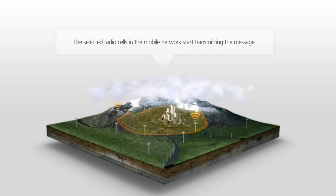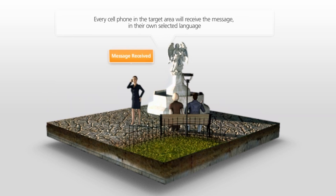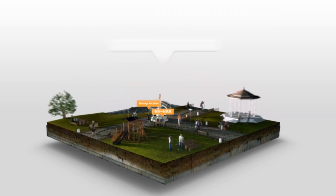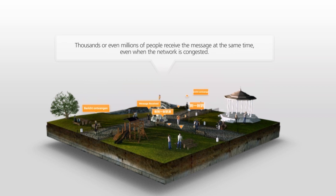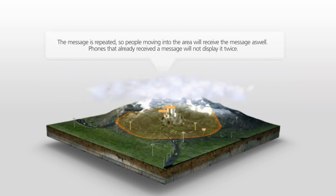The selected radio cells in the mobile network start transmitting the message. Every cell phone in the target area will receive the message in their own selected language. Thousands or even millions of people receive the message at the same time, even when the network is congested. The message is repeated, so people moving into the area will receive the message also.